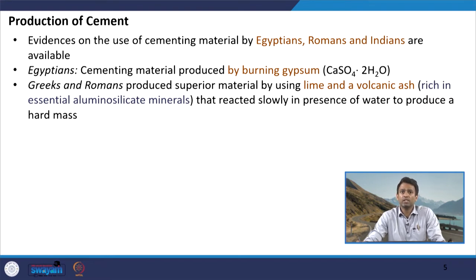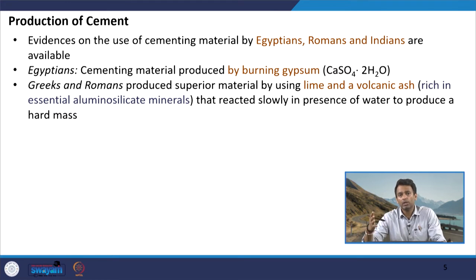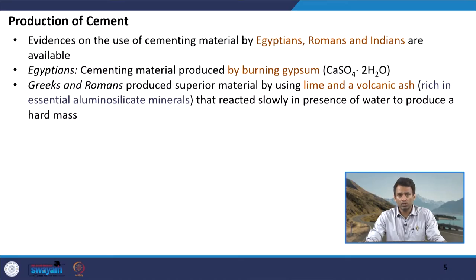A very basic concept here is that cementitious materials are generally developed by a combination of calcium oxides — for example, through lime — and alumino-silicate materials. When these materials are mixed together and undergo specific processes, we get our cementitious product. Greeks and Romans mixed lime and volcanic ash, which reacted slowly in the presence of water to produce a hard cementing mass.